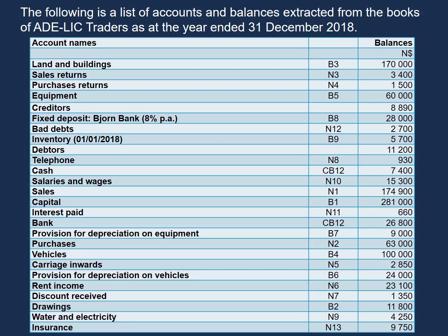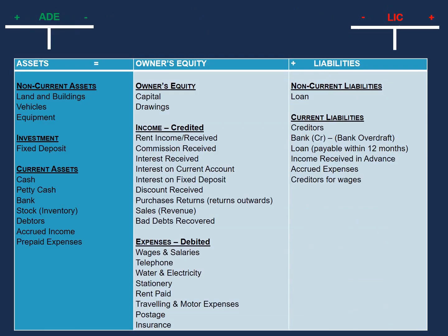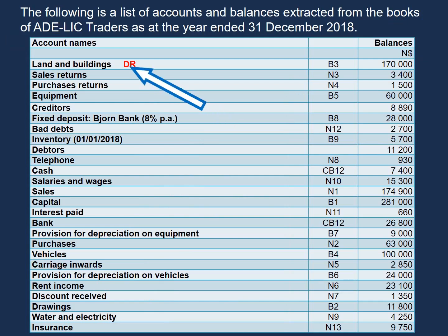Let's have a look at our first account. Our first account is land and buildings. If we were to classify land and buildings, it falls under our assets. So we should debit land and buildings in our trial balance. We will put the amount of land and buildings on the debit side.